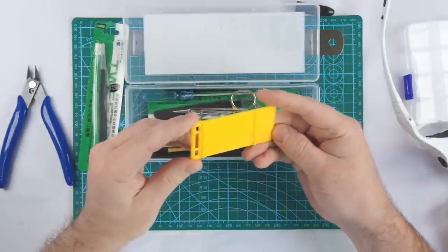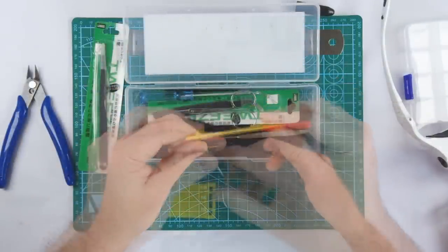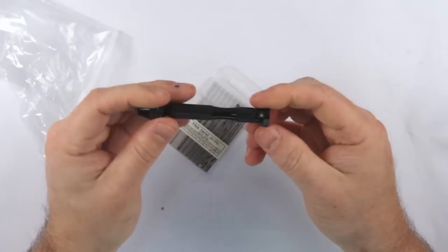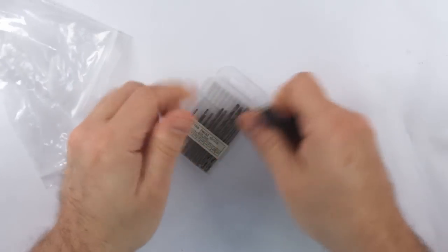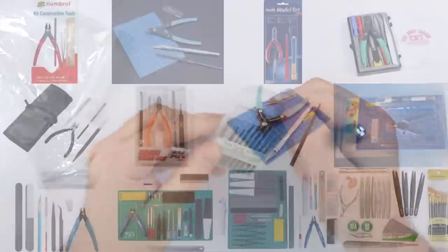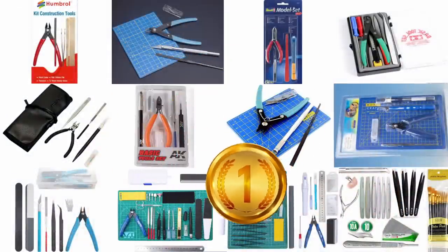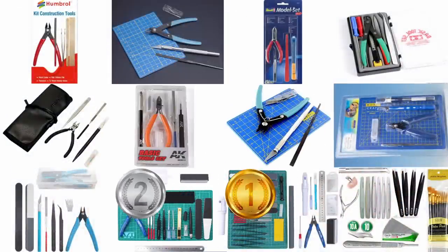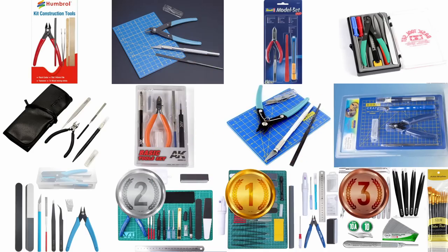You also get a case and a parts separator, which might actually be useful when you're just starting out. The WeMass set then has a small pair of scissors, whereas the Orsal set features a pin vise, though the drill bits supplied with mine were completely useless. In any case, the Orsal and WeMass sets take 1st and 2nd place respectively, with my set taking 3rd.